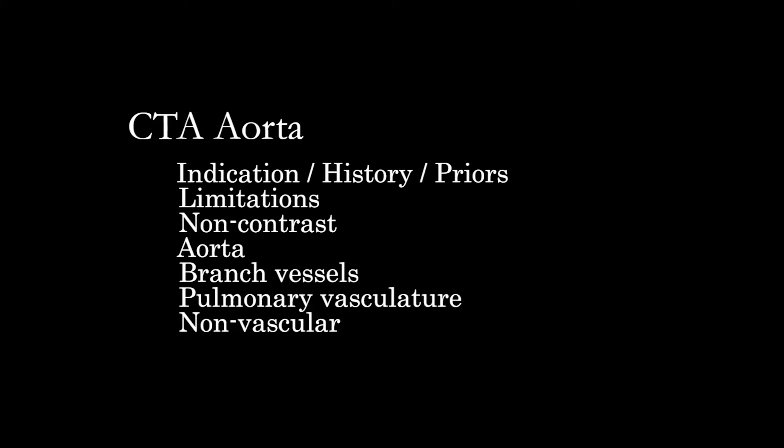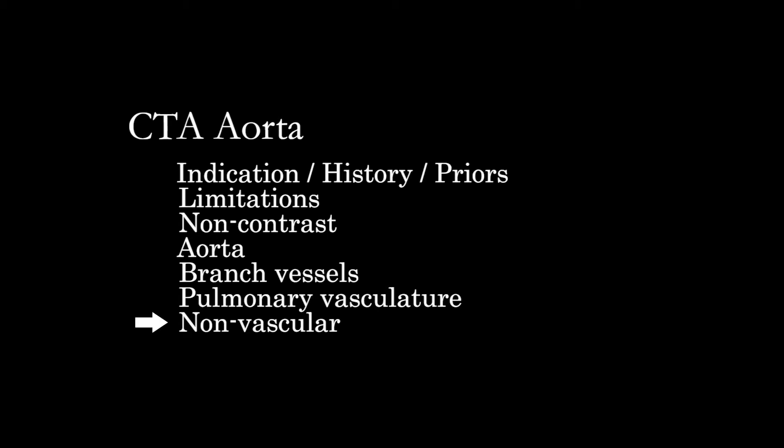The overall approach is to get a sense of what's going on with the patient, review priors, identify any limitations, look at the scout localizer, then go through the non-contrast images, and follow the aorta looking at branch vessels including coronaries, major aortic arch vessels, mesenteric, renal, and so on in the abdomen and pelvis. We'll also look at other vascular structures such as the pulmonary vasculature, then evaluate non-vascular structures in subsequent videos.